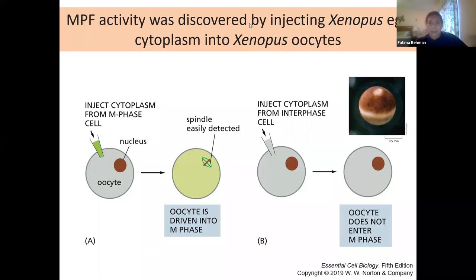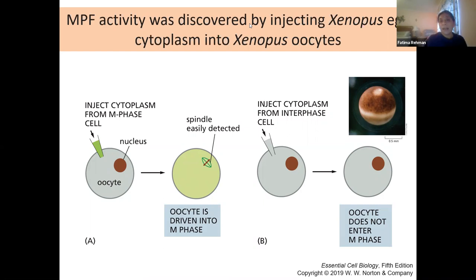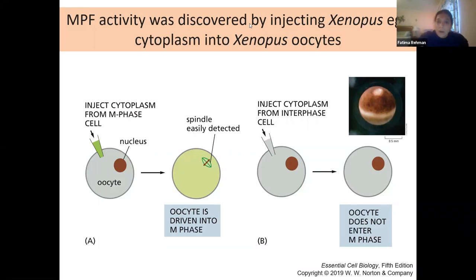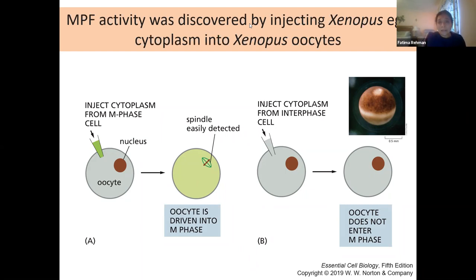These simple model systems work because genomes are conserved — many important protein sequences are conserved across various organisms. We can take the cell cycle of a yeast or Xenopus and relate it back to other eukaryotic systems including humans, because it's the same proteins and the same general system working in all of them.